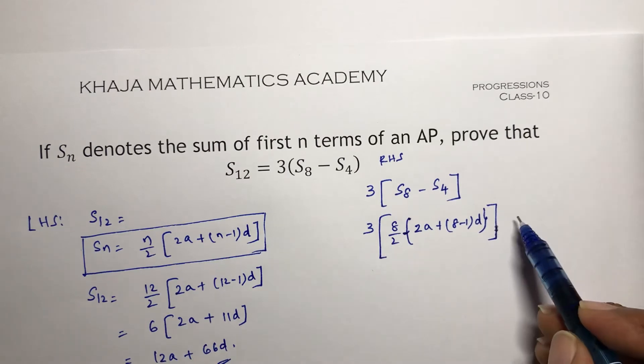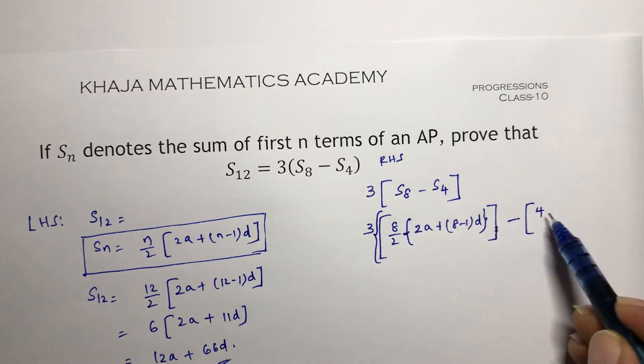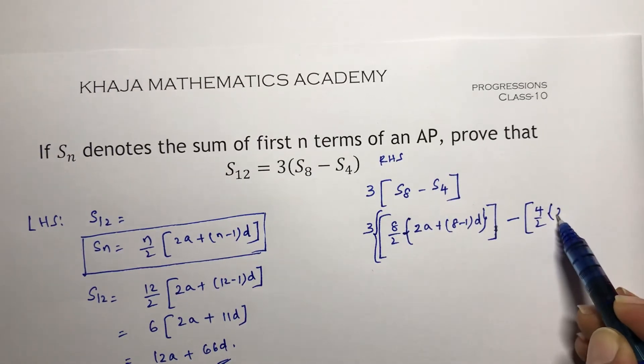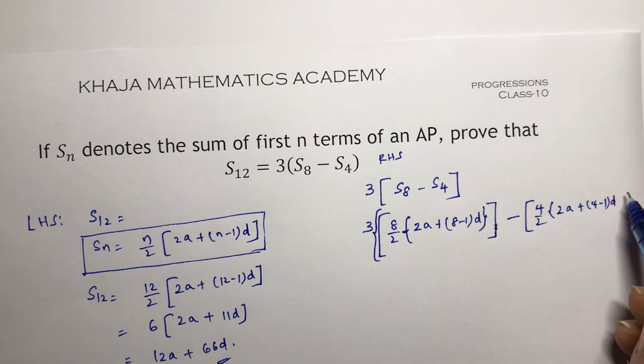And here minus 4 by 2 into 2A plus 4 minus 1 into D.